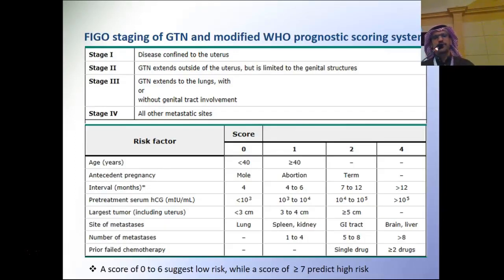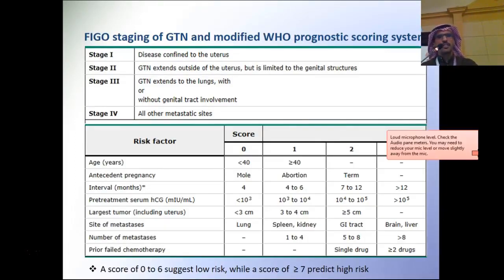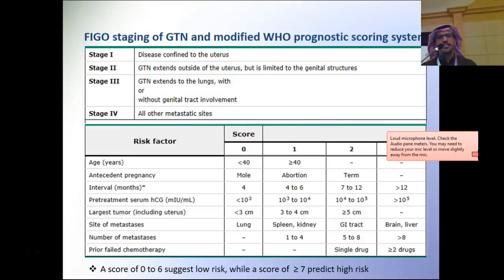The staging of GTN: Stage 1 means confined to the uterus; Stage 2 extends outside the uterus but is limited to genital structures; Stage 3 indicates lung metastasis; Stage 4 indicates other metastatic disease.